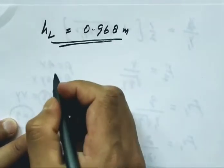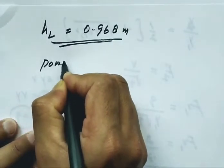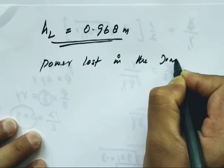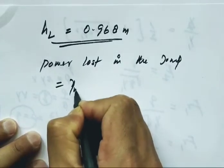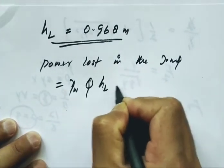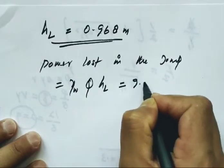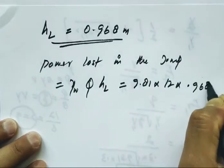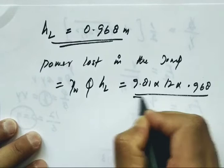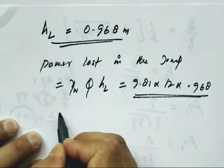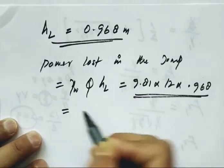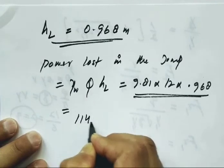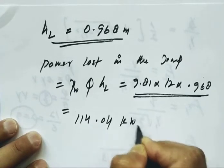Now power loss in the jump. The formula is gamma times Q into h. Using the given values, power loss equals 9.81 times 12 times 0.968, which gives us 114.04 kilowatts.